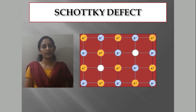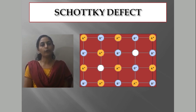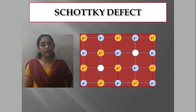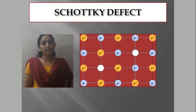Look at the picture in the slide. Among all the constituent particles, there are two vacant spaces — an A plus ion and a B minus ion are missing. This is the Schottky defect. If an equal number of cations and anions are missing from their lattice sites, such a defect is known as a Schottky defect. The electrical neutrality of the crystal is maintained.